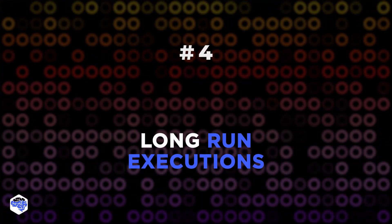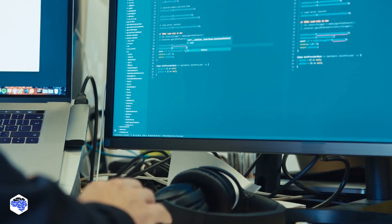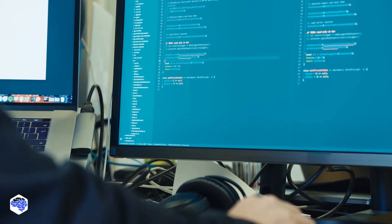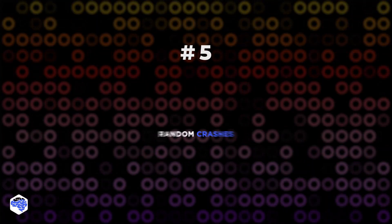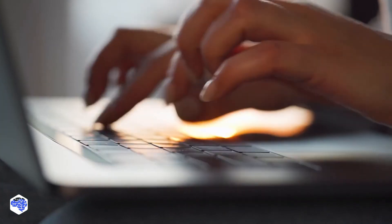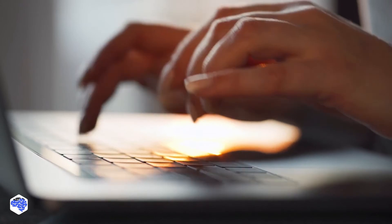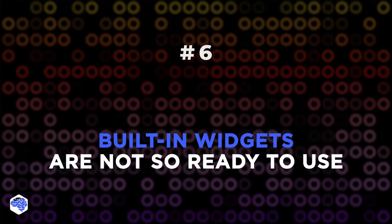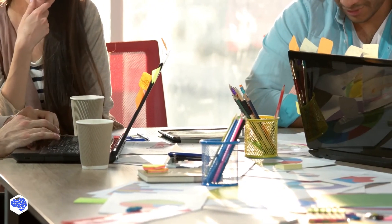Four: long-run executions — if the app has to be closed, everything has to be restarted again. Blocking activities on a regular basis is a recipe for terrible user experience. Five: random crashes — most technical issues arise when an application needs to connect to a native API or run complex processes. Six: built-in widgets are not so ready to use — even the most common Flutter widgets require customization. It's often easier to write code from scratch for more advanced functionality rather than use a built-in generic version.